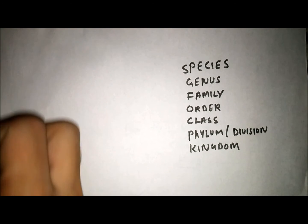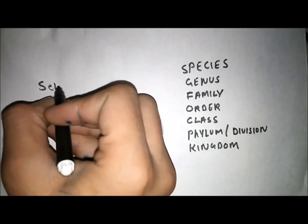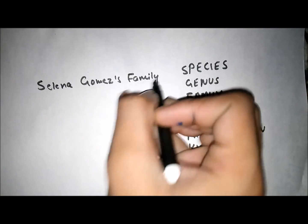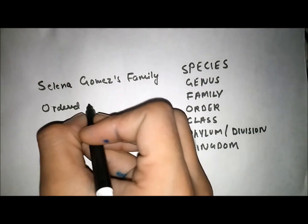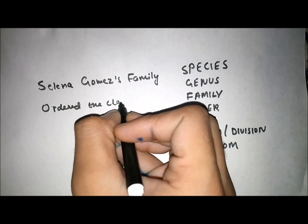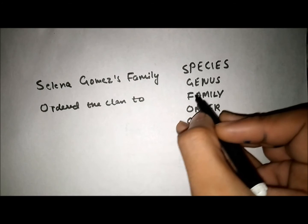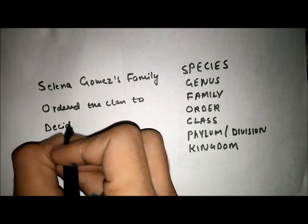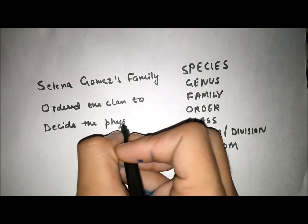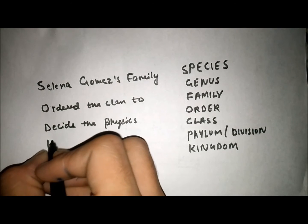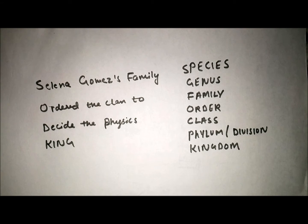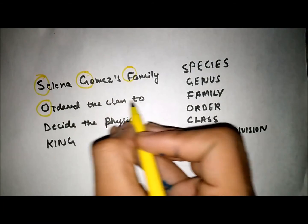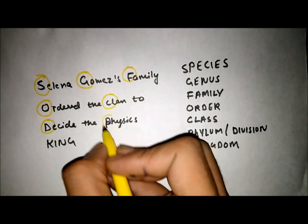Here is a short trick: the sentence is 'Selena Gomez family ordered the clan to decide the physics king.' This is the sentence that we need to remember.